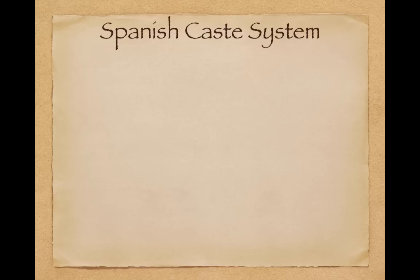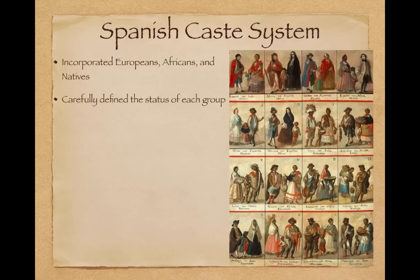A Spanish caste system developed that incorporated Europeans, Africans, and Natives — the different groups living in the Spanish colonies. This carefully defined the status of each group, and often it mattered where you were born or who your parents were.